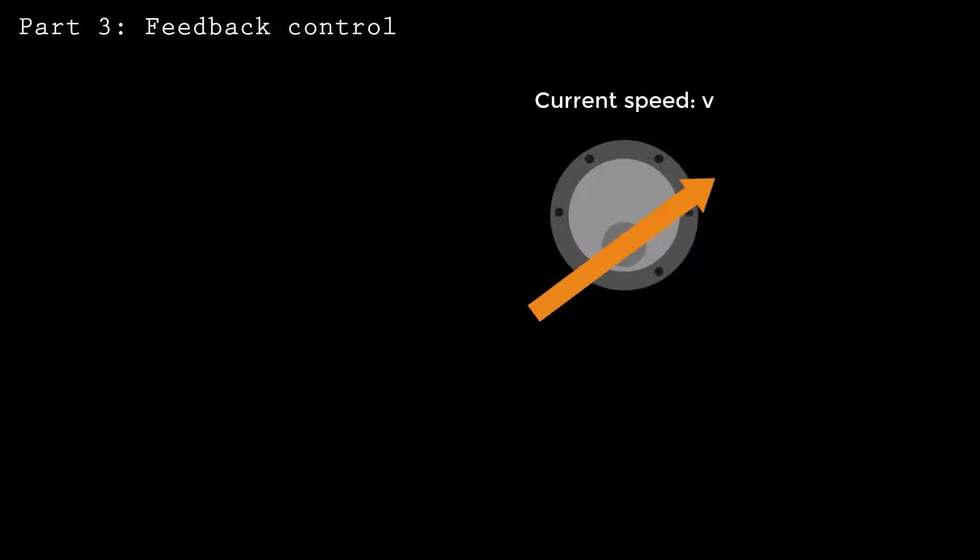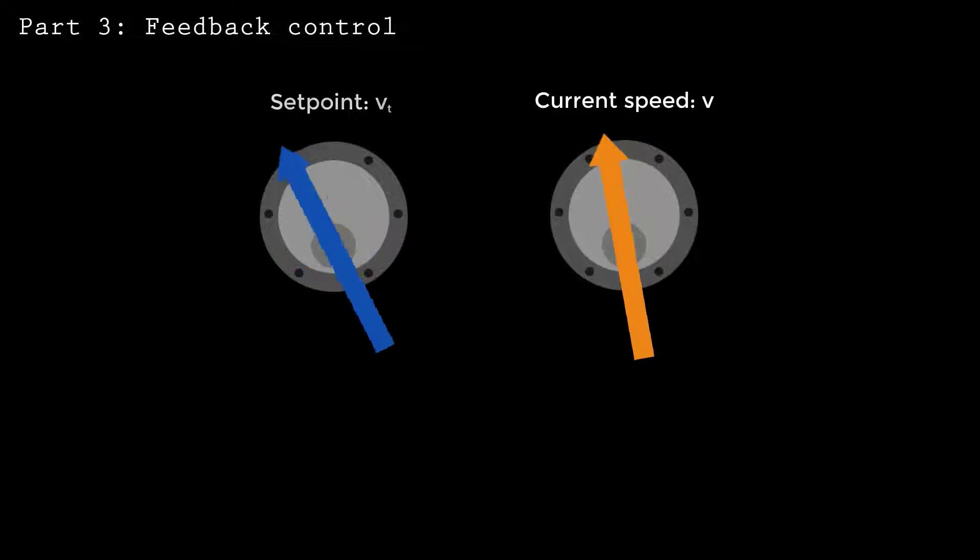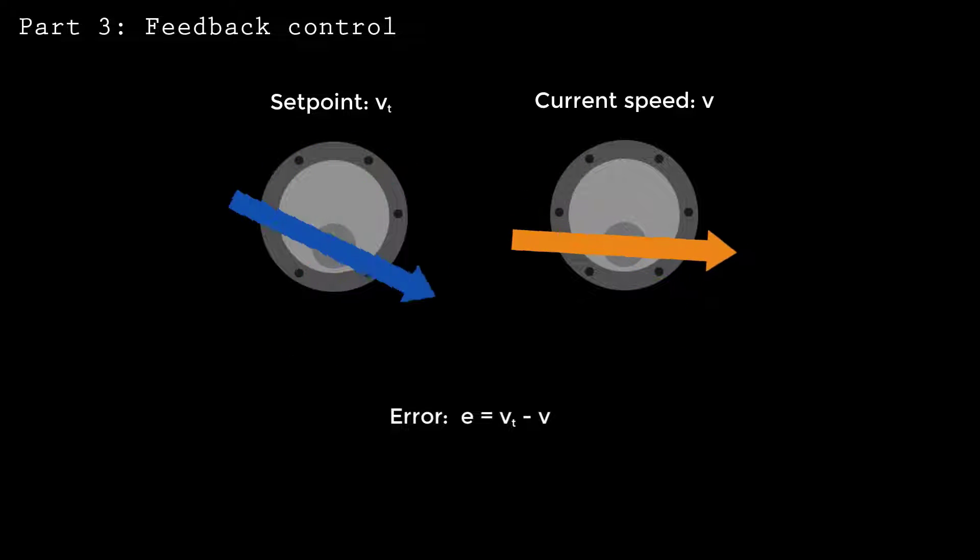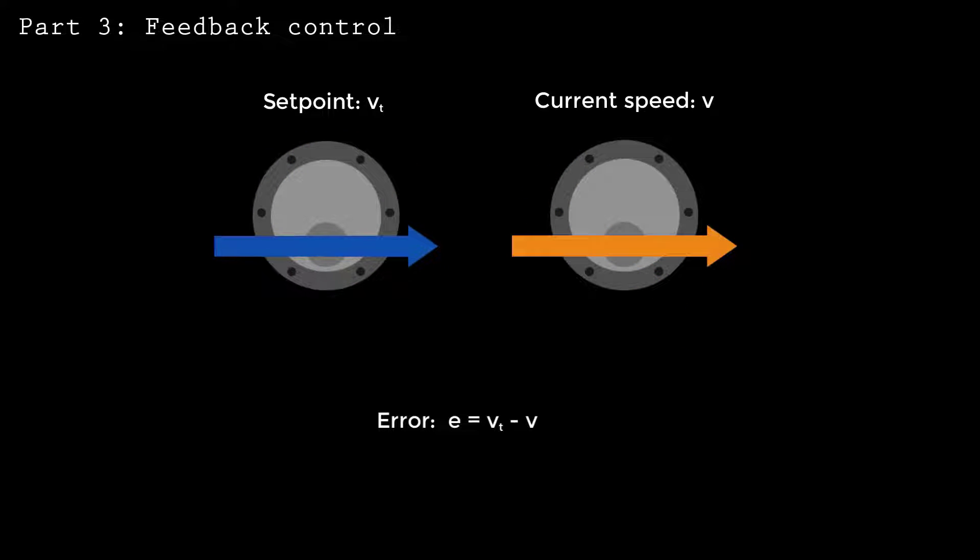A proportional controller works by adjusting the voltage across the motor leads to bring the current speed closer to a target speed, called the set point. We'll start building our feedback controller by computing the difference between the set point and the current speed. The result is the error, commonly denoted E.